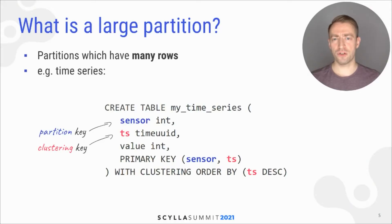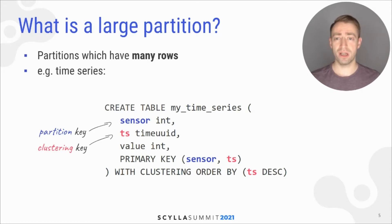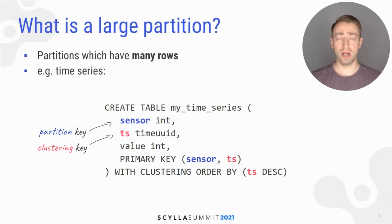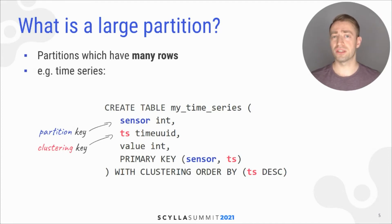A large partition is a partition which has many rows. The typical generator of large partitions is the time series data model, where you have a row per event and multiple rows per partition, grouped by clustering key, which is a timestamp.